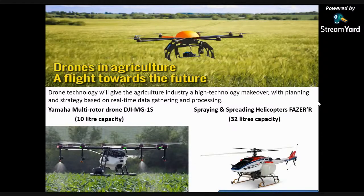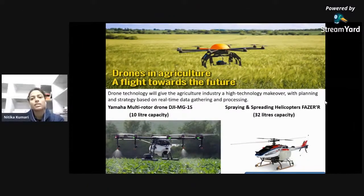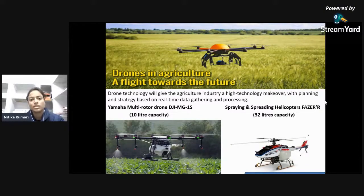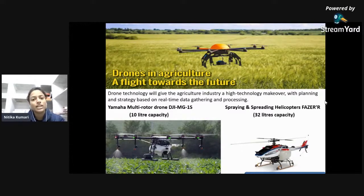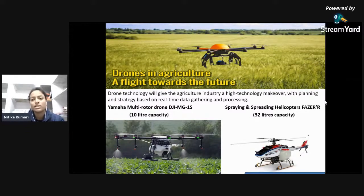Under Agriculture Robotics, drone technology is one of the most significant applications. It gives the agriculture industry a high-technology makeover through planning and strategy based on real-time data gathering and processing. One such drone is the Yamaha Multirotor Drone, known as the DJI-MG-1S, with a 10-liter capacity. The second is Spraying and Spreading Helicopters, with a capacity of about 32 liters.